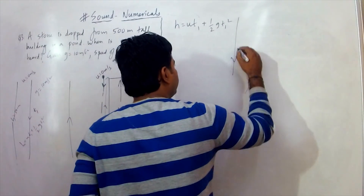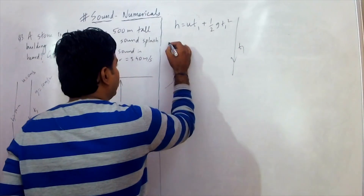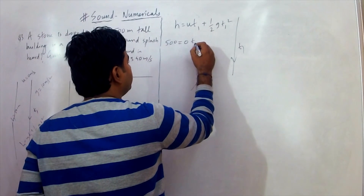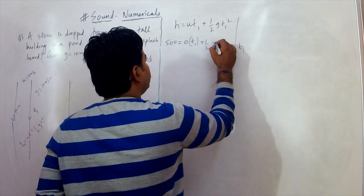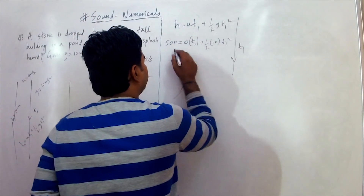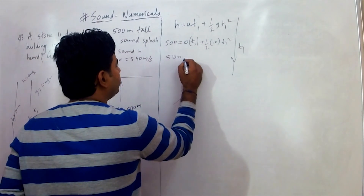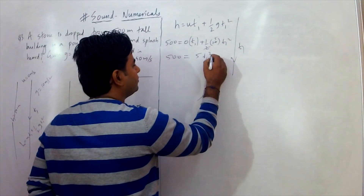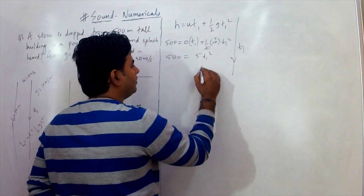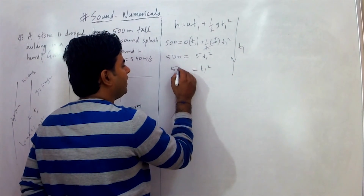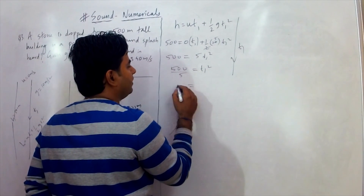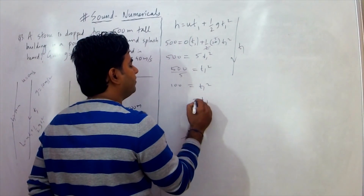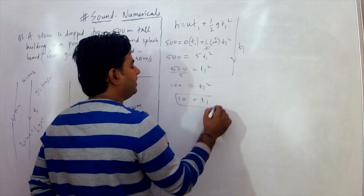Substituting values: 500 = 0 + ½ × 10 × T1², which gives 500 = 5T1². So T1² = 500/5 = 100, and T1 = √100 = 10 seconds.